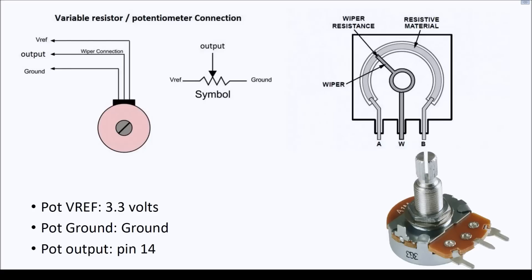A potentiometer has a resistive material around its circumference, and as you turn the knob a wiper brushes against that material, changing the resistance. If you feed a voltage into the A and B pins — the extreme left and right pins — the resulting voltage on the wiper pin W will increase as you turn it clockwise. Applying 3.3 volts to A and ground to B causes the wiper voltage to vary with position.